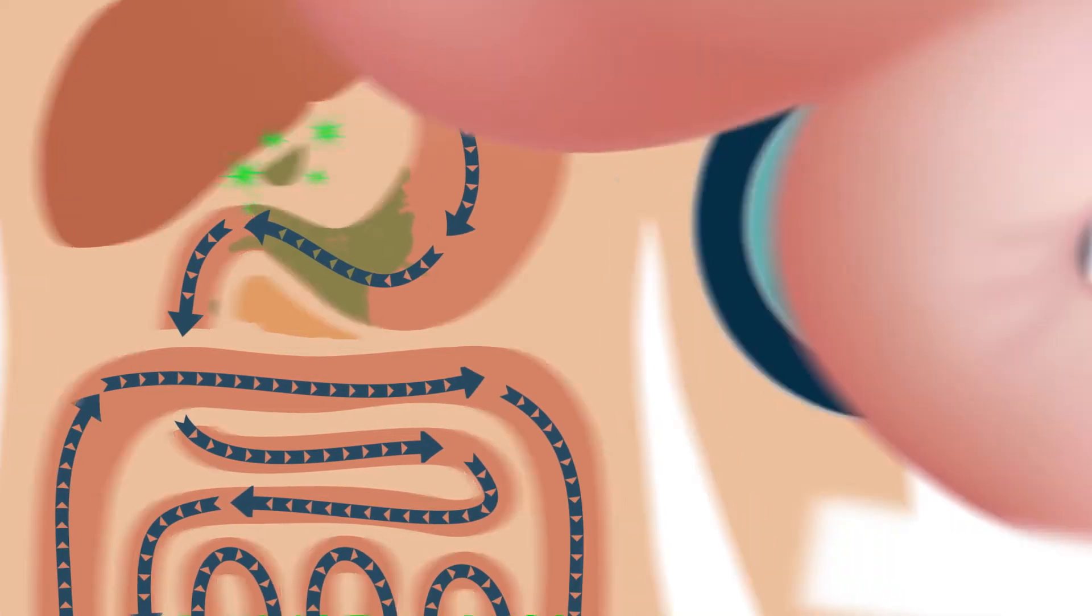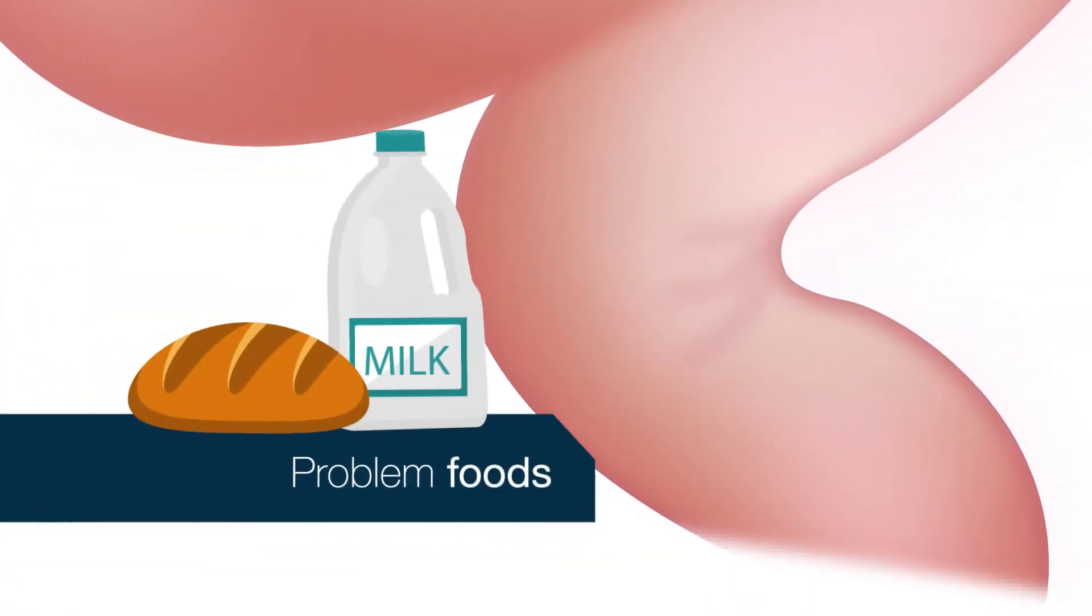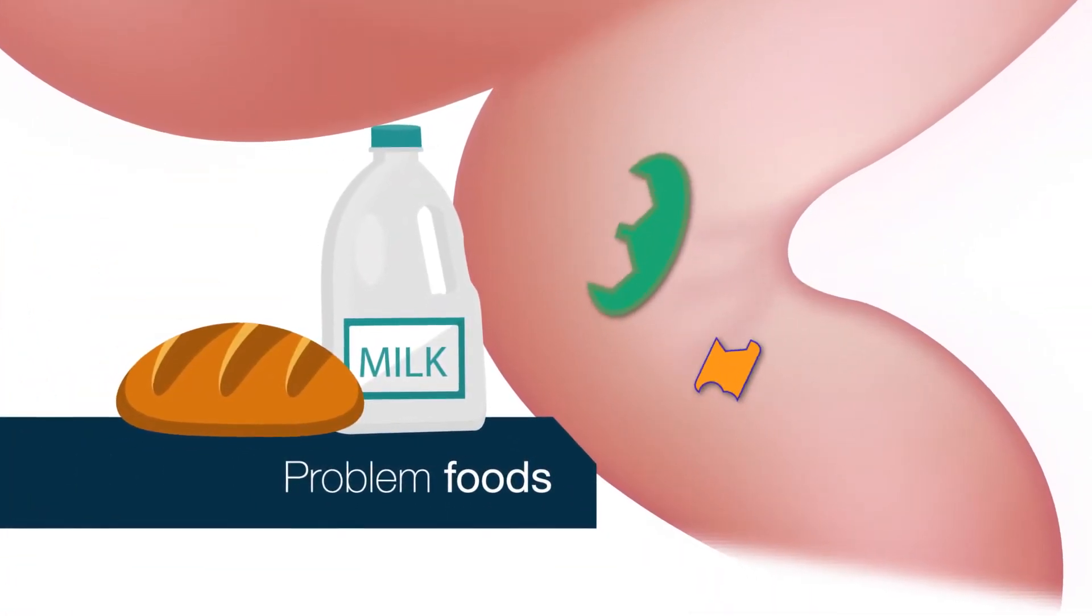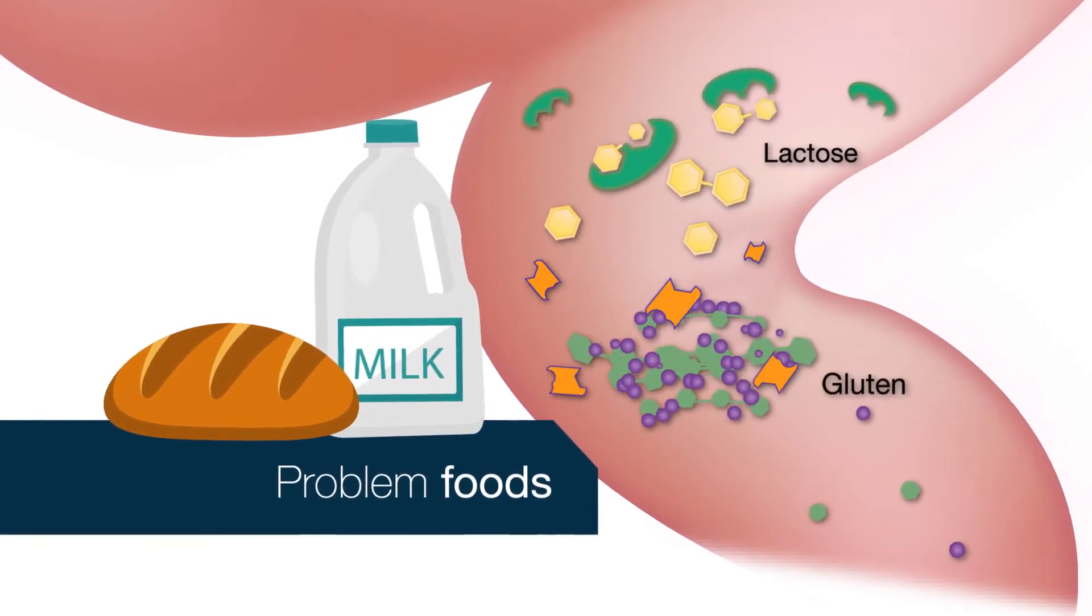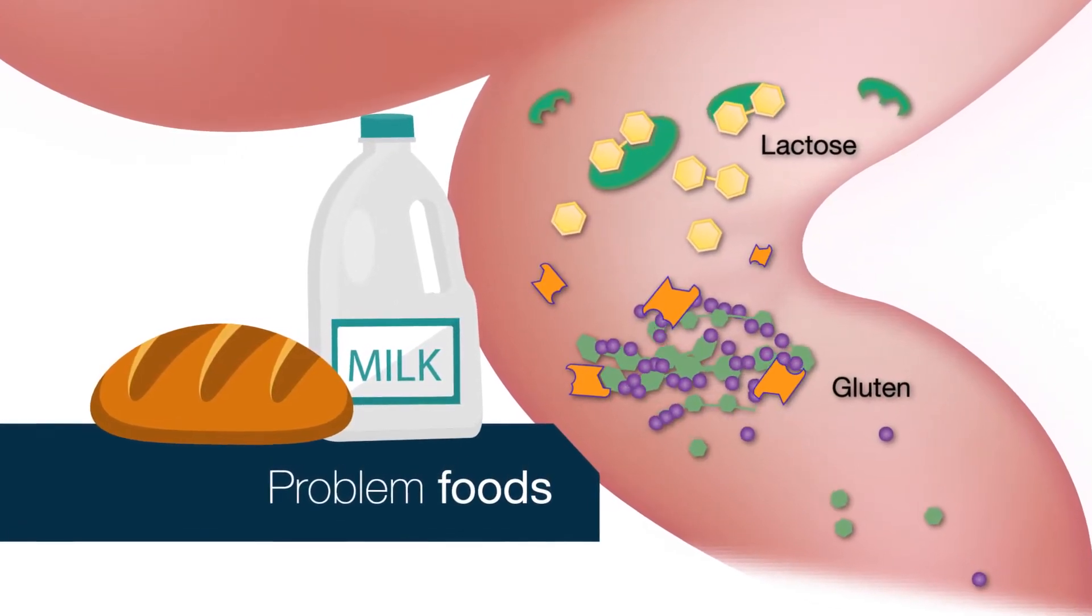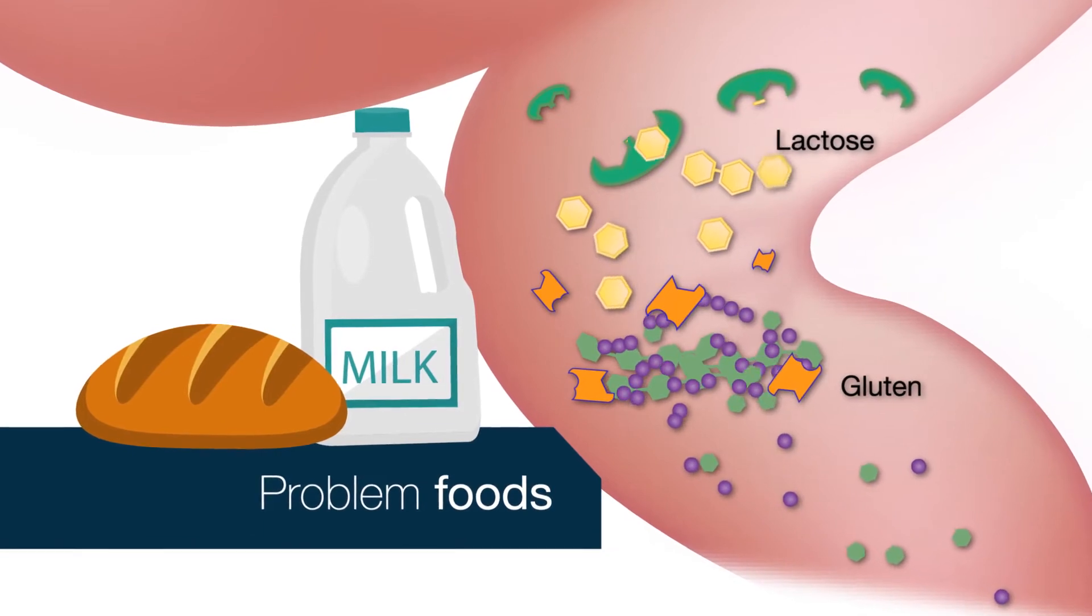Digestzyme V also includes targeted enzymes that break down problem foods, enzymes specifically selected to break down complex immunogenic food compounds like gluten and dairy that can lead to food sensitivities.